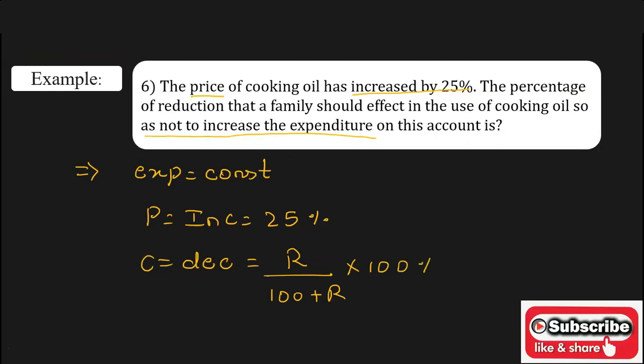In the denominator it is 100 plus R. Why? Because the price is getting increased, so we have to take the plus sign. R's value is the value of the increased percentage, that is nothing but 25 percent.